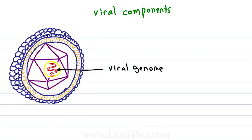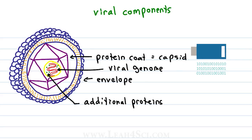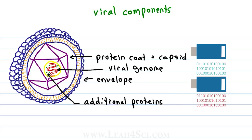Every virus contains a viral genome and a protein coat called the capsid. Some viruses also contain additional proteins that act as machinery to help in the takeover. And some viruses also contain a viral envelope — a lipid bilayer, just like the cell or the endoplasmic reticulum, that surrounds the protein capsid. In our music USB example: the viral genome is the code for your songs, the capsid is the USB stick itself, the additional proteins tell the new computer what to do with the information, and the envelope is like those funky USB covers that look like teddy bears or other animals.